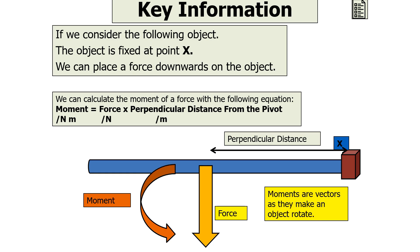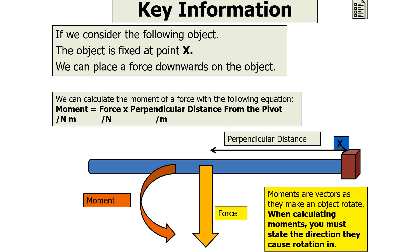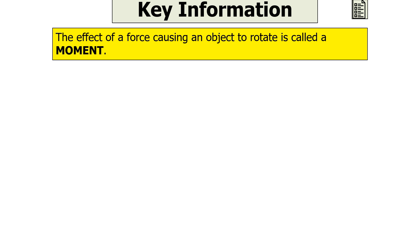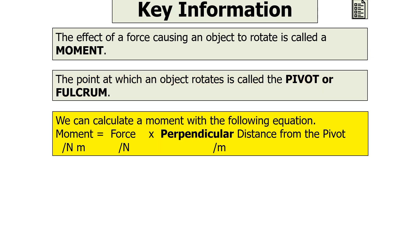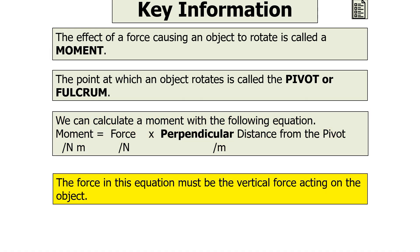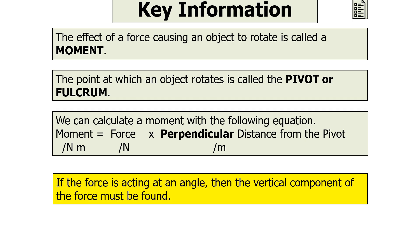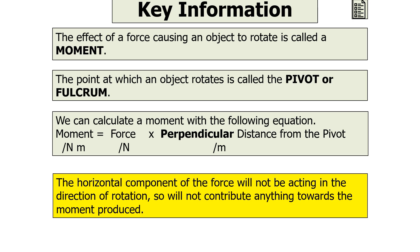Moments are vectors as they make objects rotate. When calculating moments, you must state the direction they cause rotation in. The force in the moment equation must be the vertical force acting on the object. If the force is acting at an angle, then the vertical component of the force must be found. The horizontal component will not be acting in the direction of rotation, so it will not contribute to the moment being produced.